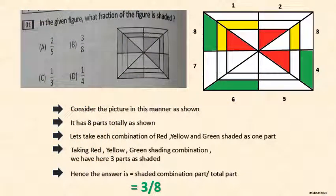In this question they have given what fraction of figure is shaded. For the figure I have given a colored one to be easily recognizable. The total number of parts is equal to 8. And the number of shaded parts which is combination of red, yellow, green is 3. So the answer is shaded combination part divided by total part which is equal to 3 by 8.